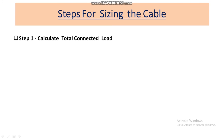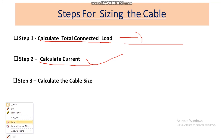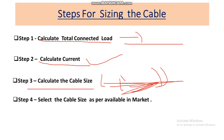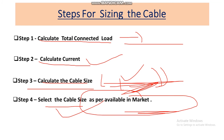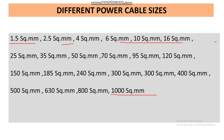Now let's move to the steps. There are four steps to follow for sizing the cable. First, calculate the total load of the feeder or circuit. Second, calculate the current. Third, calculate the cable size. Finally, select the cable size as per what is available in the market, because the exact calculated value may not be available. Cable sizes available in the market range from 1.5 square mm to 1000 square mm.